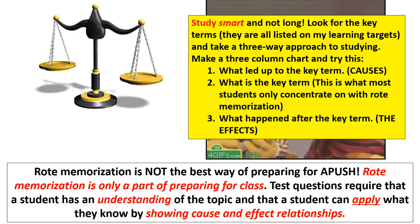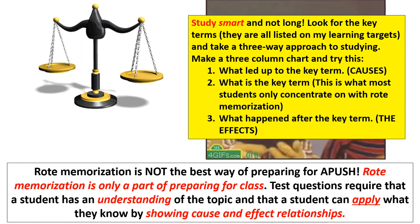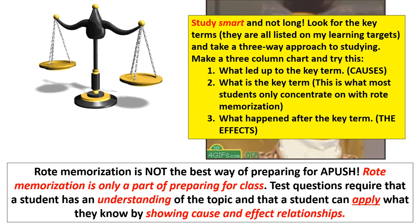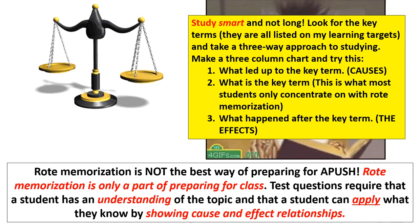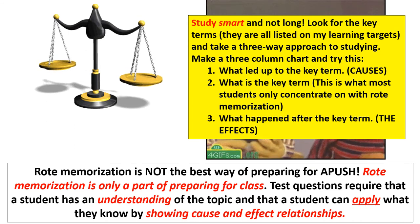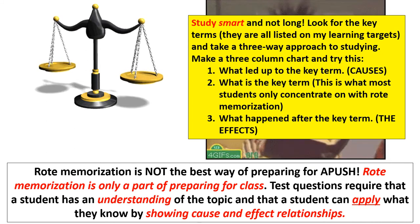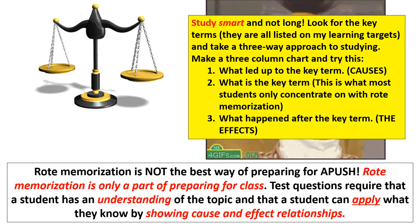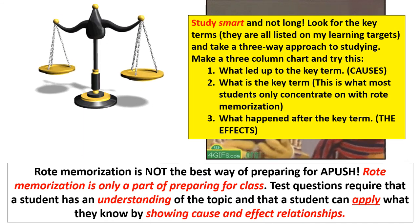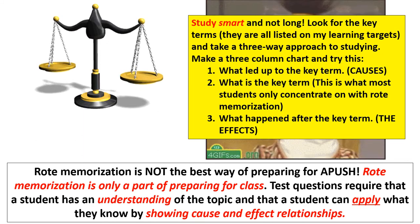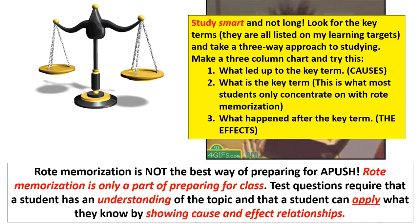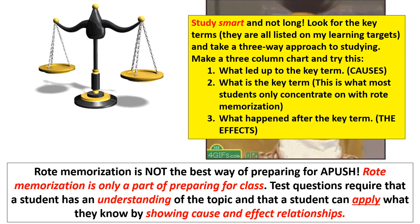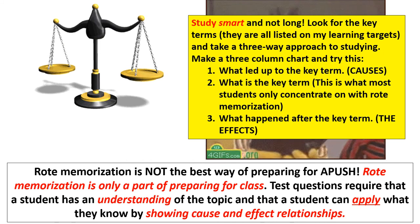A lot of students have told me they studied hours for a test and still didn't do as well as they'd like. Maybe what you need to do is simply change up the way that you study — study smart, not long. Look for the key terms; you can find all the key terms for every chapter on my learning targets on my teacher website. Think about taking a three-way approach: make a three-column chart — what led up to the key term, what is the key term, and what happened after.